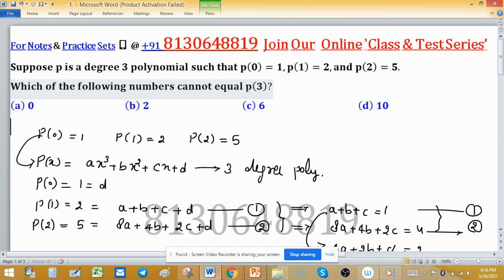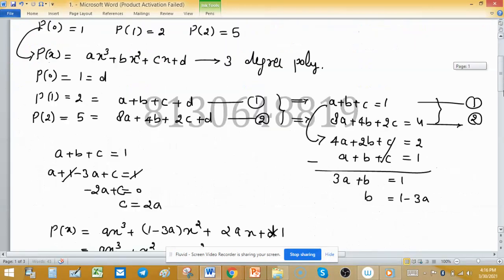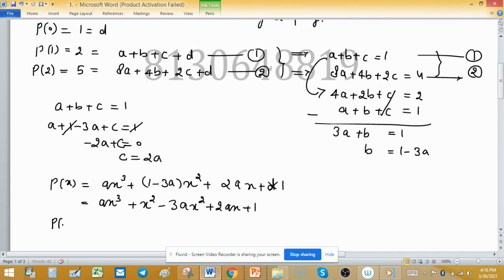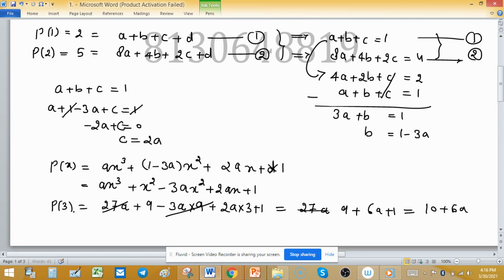We have to tell the value of P(3) cannot be possible. So from this P(3) will be 27A + 9 - 3A × 9 + 2A × 3 + 1. 27A and this is also 27A negative, so directly 9 + 6A + 1, so this equals 10 + 6A. So value of P(3) will be 10 + 6A.